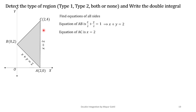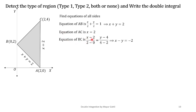We write x = 2 on the diagram. Now for the equation of BC, we use the two-point formula: (x - 2)/(2 - 0) = (y - 4)/(4 - 2). When we simplify this, it gives us x - y = -2. We write this equation on the diagram as well.